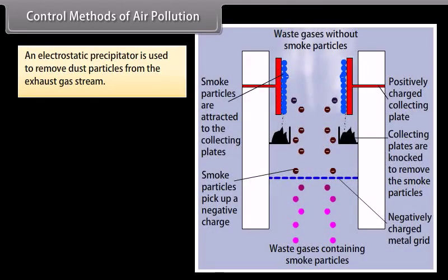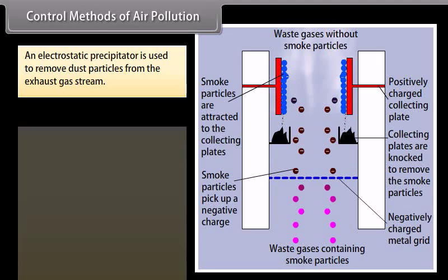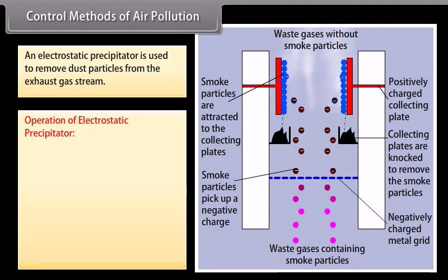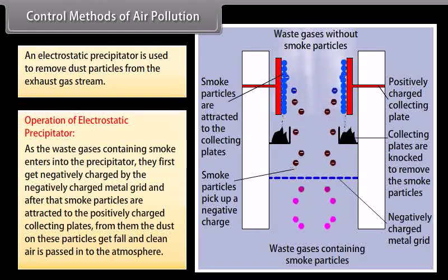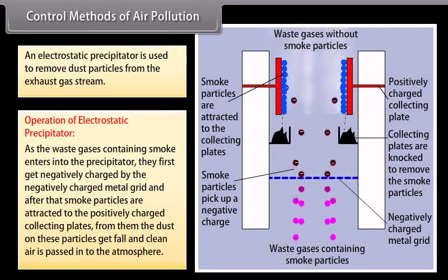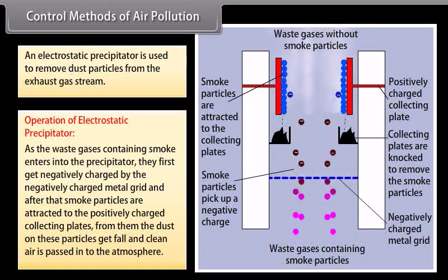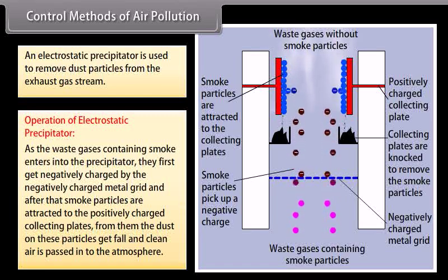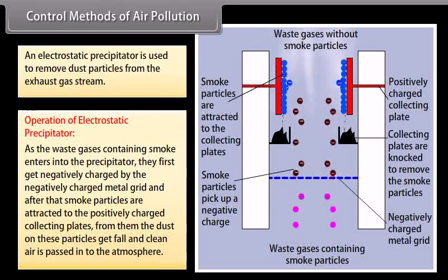An electrostatic precipitator is used to remove dust particles from the exhaust gas stream. As the waste gases containing smoke enter the precipitator, they first get negatively charged by the negatively charged metal grid. After that, smoke particles are attracted to the positively charged collecting plates. From them, the dust on these particles falls and clean air is passed into the atmosphere.